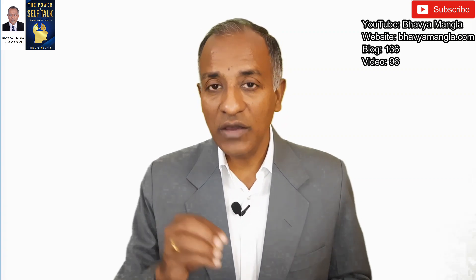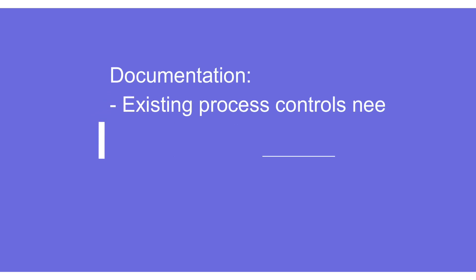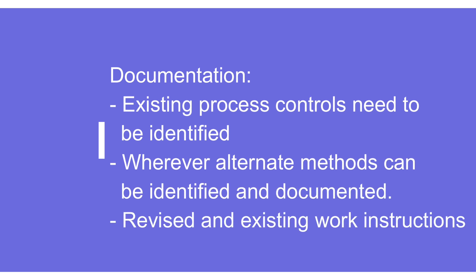That brings point number 2: documentation, which is generally missing in most cases. The intent is that whenever we are doing any 4M change, it should be properly documented. Whatever the alternate method is, we need to specify how we are using it, and for each alternate method, the required work instructions or any other changes needed must be specified and documented.